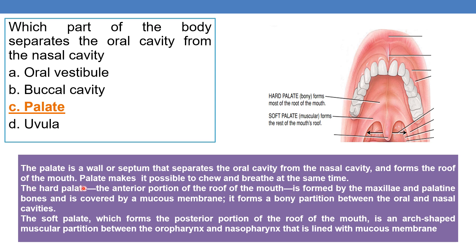Coming to the hard palate — this is the anterior portion of the roof of the mouth. It is formed by the maxillae and palatine bones, and is covered by a mucous membrane. Hard palate forms a bony partition between the oral and the nasal cavity.